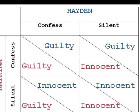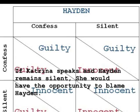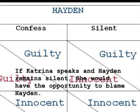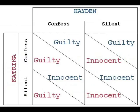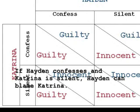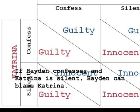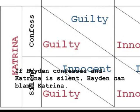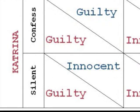If Katrina confesses and Hayden remains silent, Katrina would have the opportunity to blame Hayden and claim her innocence — for example, saying that she was drugged by him. On the other hand, if Hayden confesses and Katrina remains silent, he would be the one with the opportunity to blame the other. Notice that it is possible that both of them would think that confessing would be good, provided that the other remains silent, even if this move is too risky.